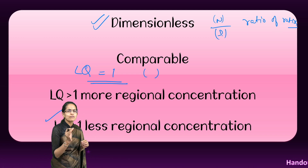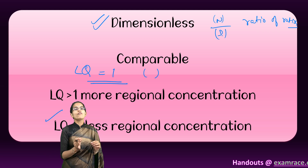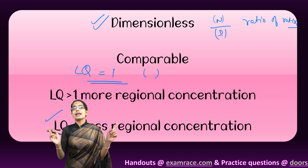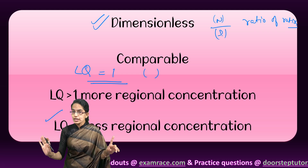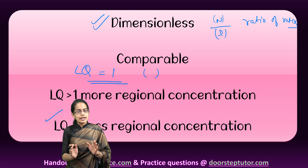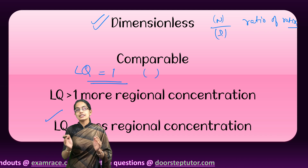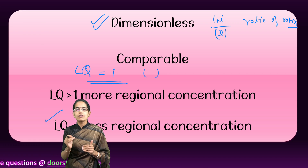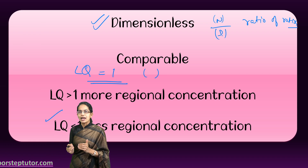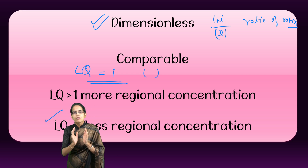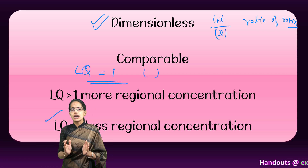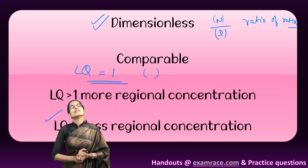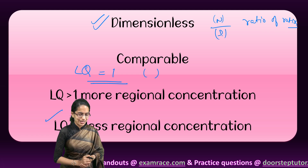This was a simple example of understanding the location quotient — how we apply it to a research project and how we analyze the findings. Analysis of findings is very important when applying any concept. We will be covering many more important measures and indexes in upcoming sessions, so stay tuned and have a wonderful day ahead.